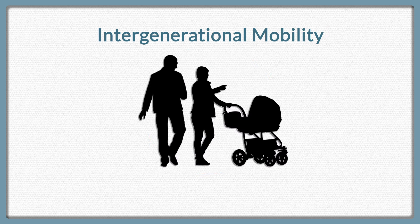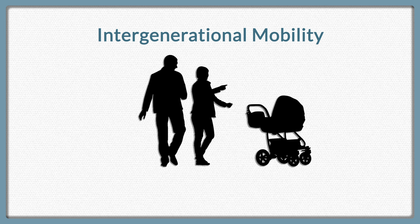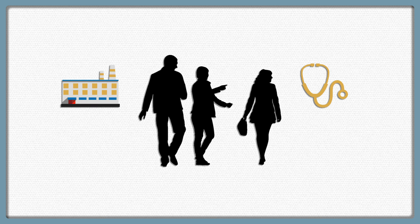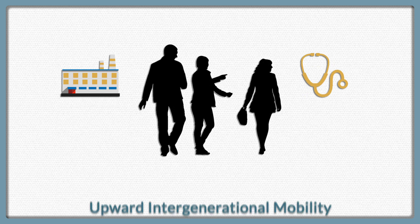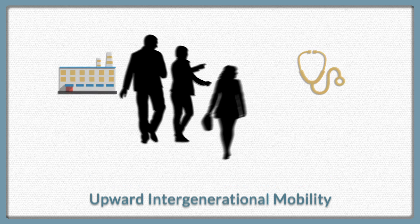This is called intergenerational mobility. For example, if a father worked on a factory floor at age 35, but his daughter became a doctor and was making more at the same age, we would call that upward intergenerational mobility.